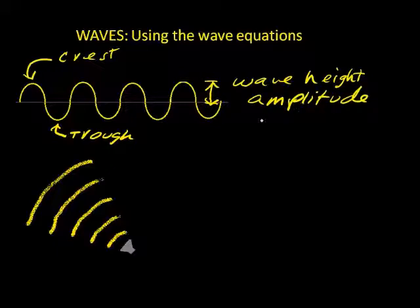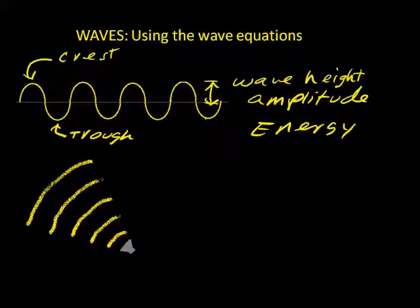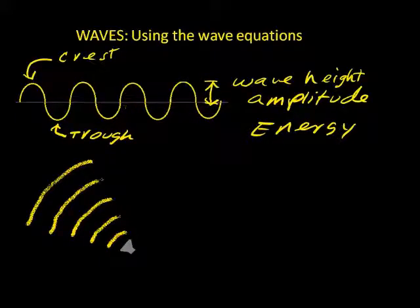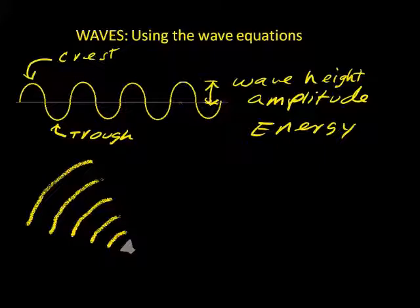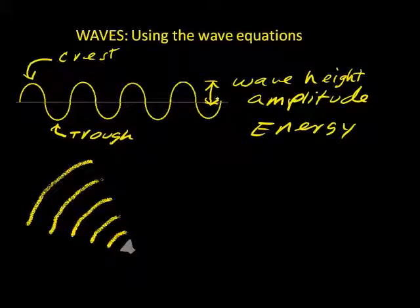Amplitude equates to the energy that the wave is carrying. The higher the wave, the greater the energy. If you were to take all the energy out of this transverse wave, there wouldn't be a wave — you'd just have a flat line. If you don't shake the rope, the rope is straight. But as you start to vibrate and add energy, the wave gets higher and higher. So the height of the wave equates to the energy that the wave is carrying.